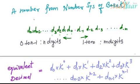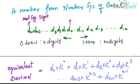In this kind of representation, we call the digit in the extreme left the most significant digit (MSD), and the digit in the extreme right is called the least significant digit (LSD). We are talking only about the integral part of the number here.